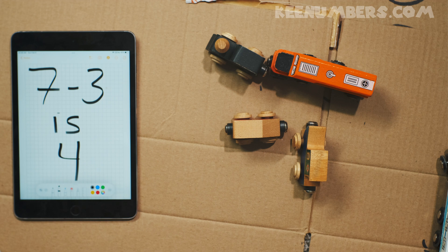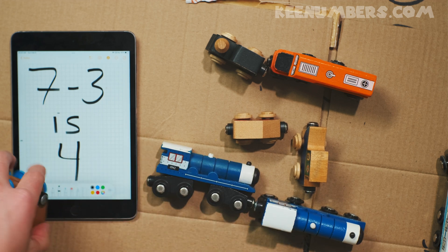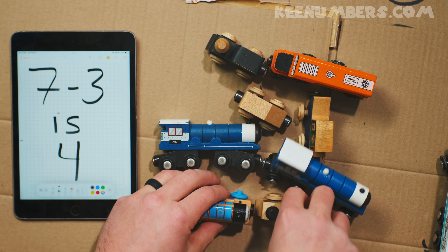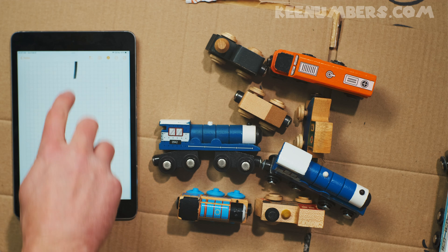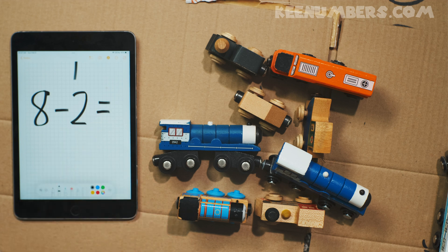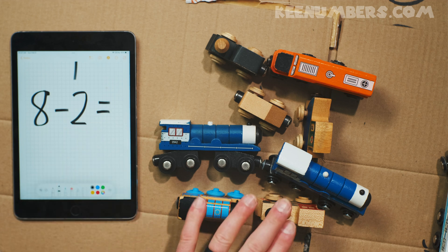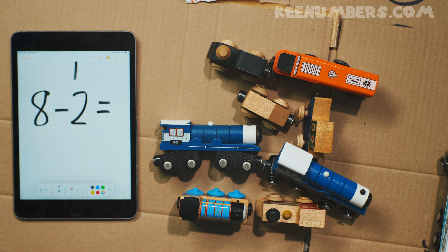Woo-hoo! Hey, let's do another one. What if you have eight train cars? And we want to subtract two train cars. We have eight. Let's take away two. One, two, three, four, five, six, seven, eight. Yep. Eight train cars. Let's take away two.